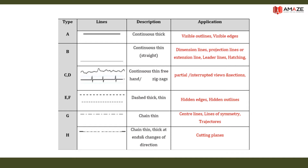Continuous thick lines are used for visible outlines and visible edges. Continuous thin lines are used for dimension lines, projection lines, extension lines, leader lines, and hatching lines. Continuous thin freehand lines — zigzag lines — are used for partial sections and partial views. Dashed thick or thin lines are used for hidden edges or hidden outlines.